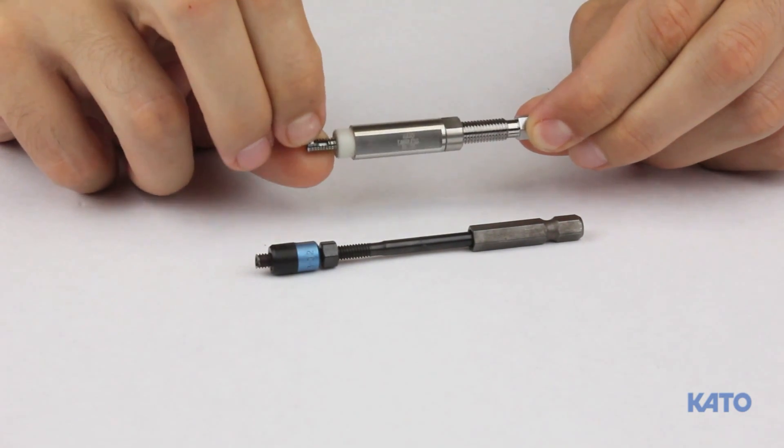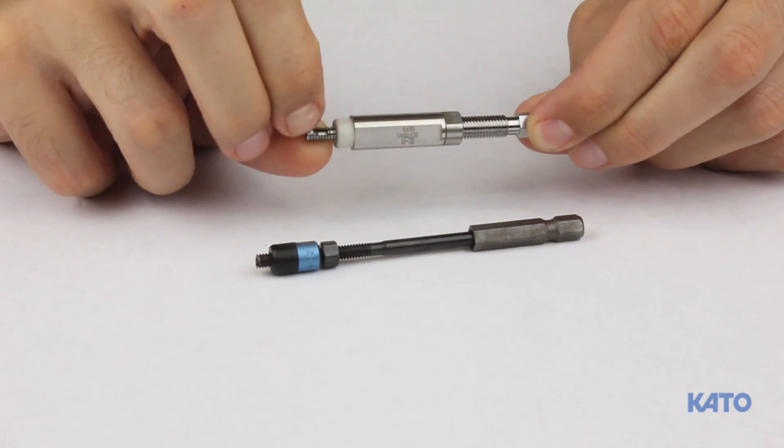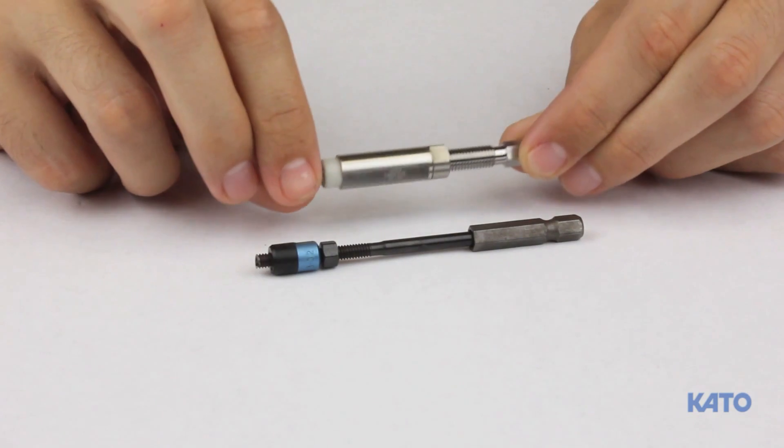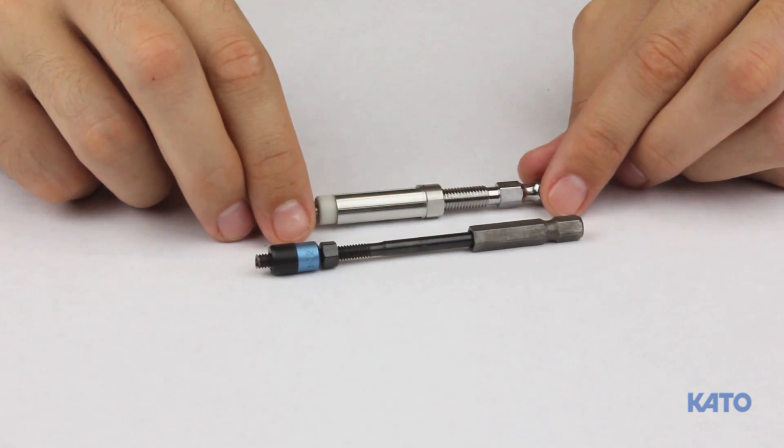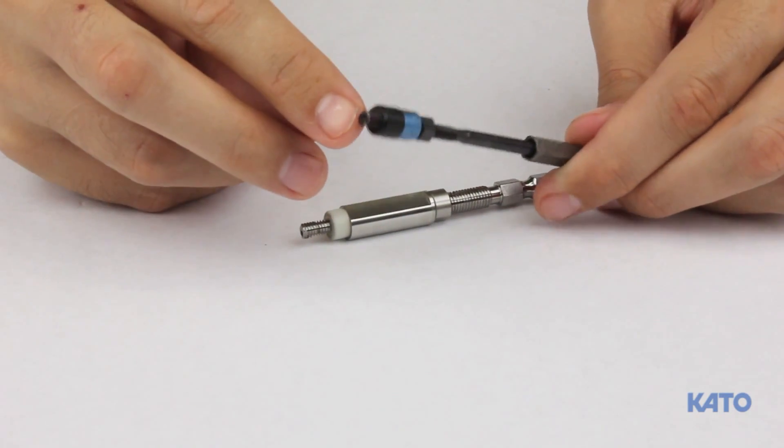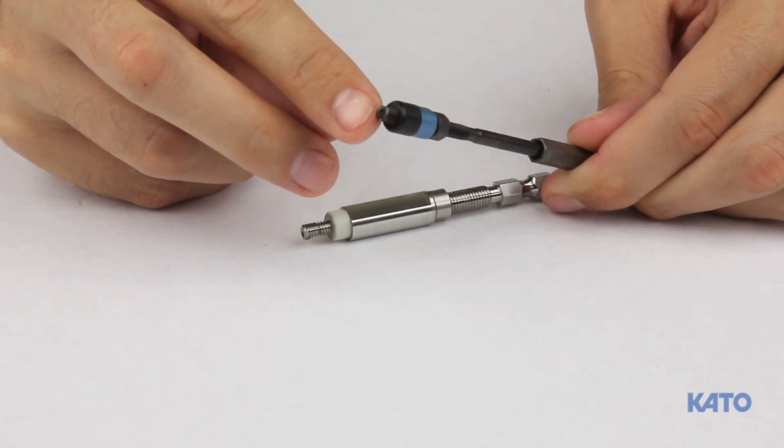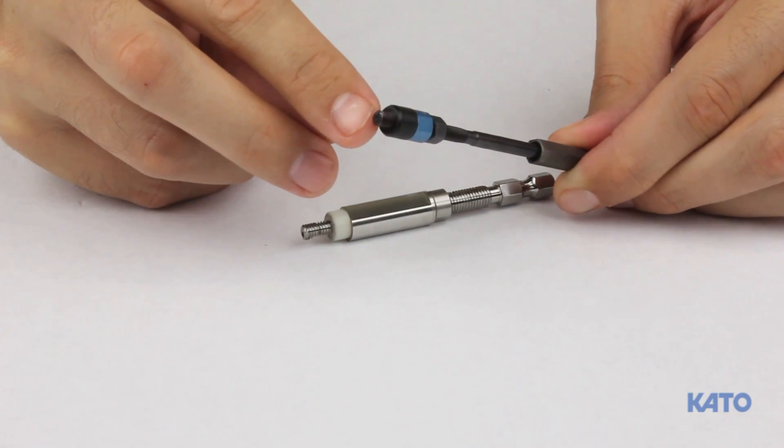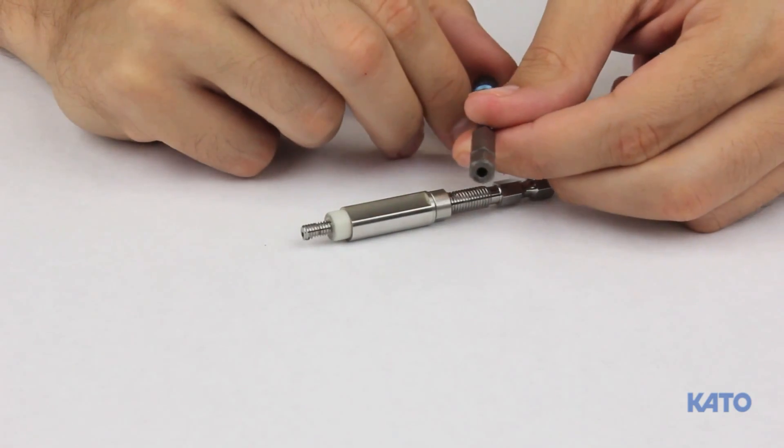Inside the tangless mandrel is the spring-loaded pivoting pawl. This is the part that will grab the insert and drive it into the STI tapped hole. The tanged mandrel has a drive contour that will grab hold of the tang and drive the insert in the STI tapped hole. On the back here we have a standard quarter inch hex.